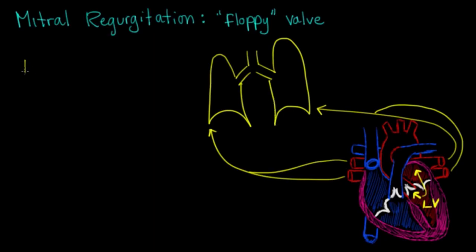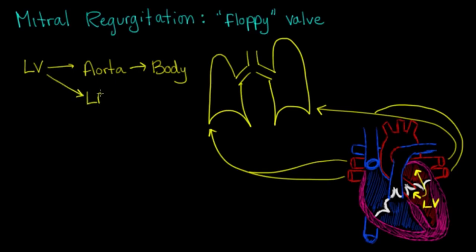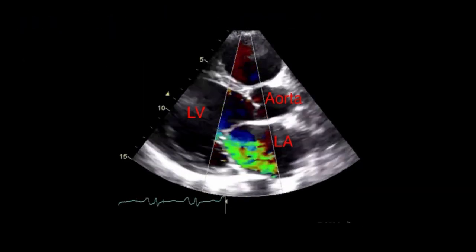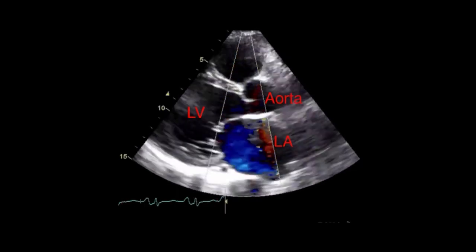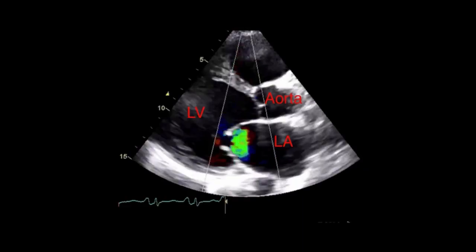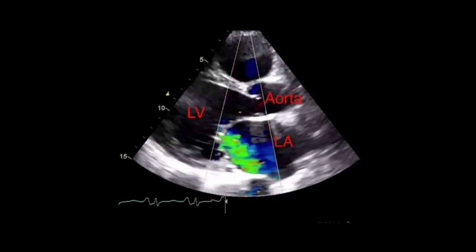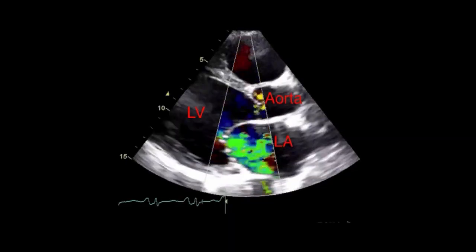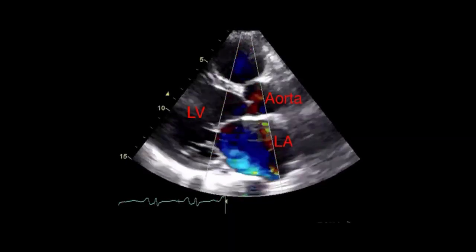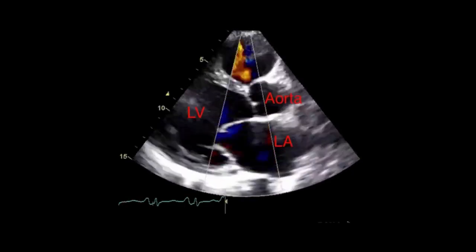So the normal path of blood would be from the left ventricle to the aorta and out to the rest of the body. But with mitral regurgitation, blood goes from the left ventricle back to the left atrium and can back up in the lungs or pulmonary system, causing symptoms. Here is an echocardiogram of someone with mitral regurgitation — notice the blue flash back into the left atrium when the heart contracts. Normally blood should go out through the aorta, but that blue flash indicates blood coming back into the left atrium, confirming mitral regurgitation.